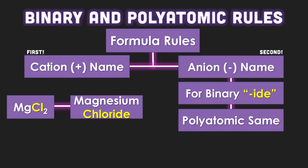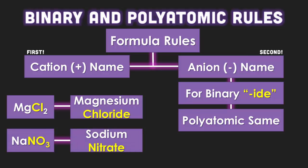So the polyatomic ion is the same, but you just leave it the same. You don't change the ending. So in this case, you have NO3, which is a nitrate, and it's bound to a sodium, so we call it sodium nitrate.